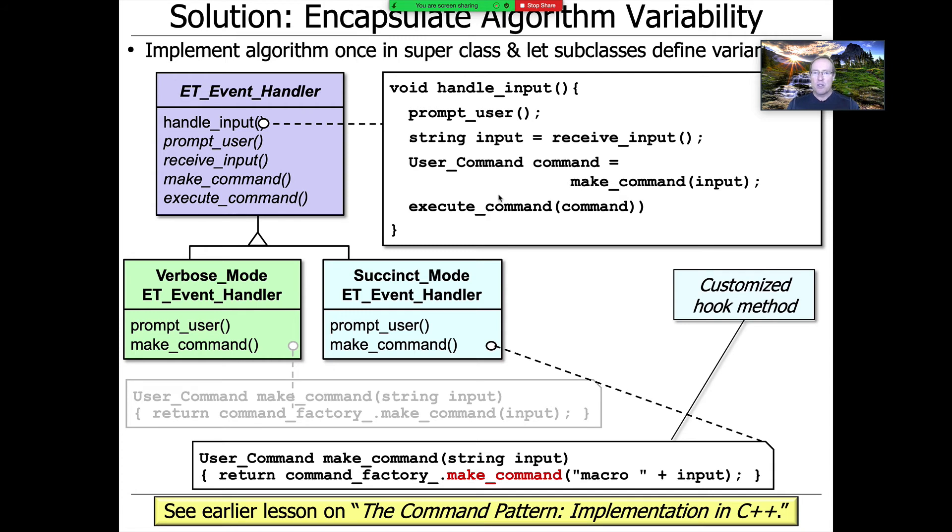This is going to work for succinct mode because it's going to bundle together the processing of using the format command to be the in order format command, making the expression command be the input provided, and then bundling up an eval command with postorder traversal processing. All those things are put together in the macro command. If you go back and watch the command pattern video, you'll see how macro commands are defined. That's how we implement succinct mode. We have three commands or subcommands bundled together.